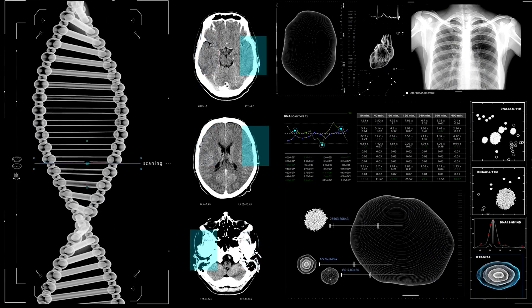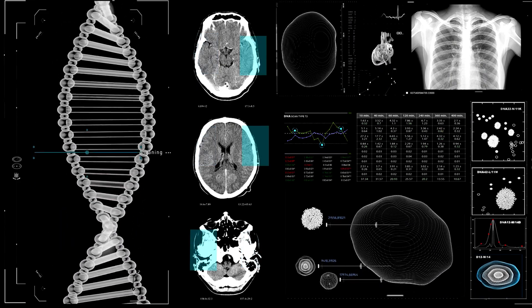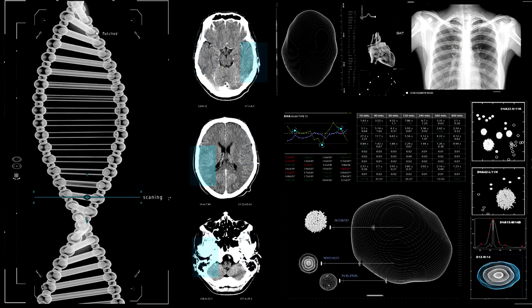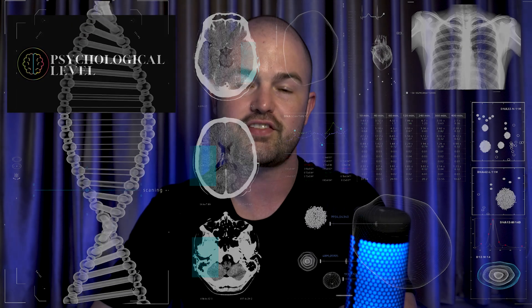The biological level of analysis focuses on the physiological processes that underlie our psychology. This includes the study of genetics, neurochemistry, brain structure, and other physical factors that can influence our behavior.